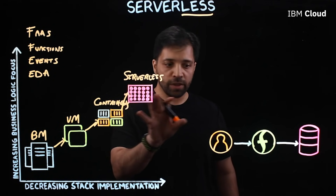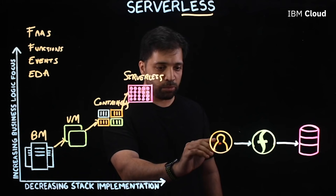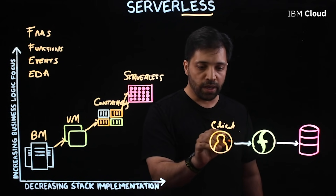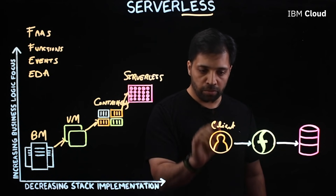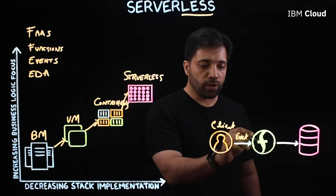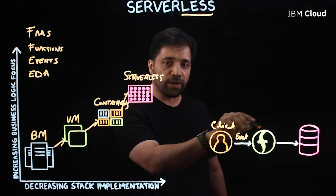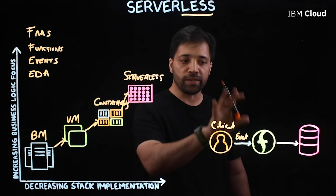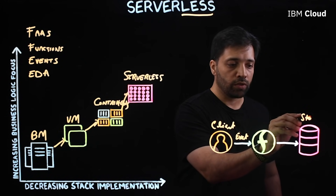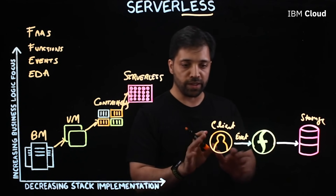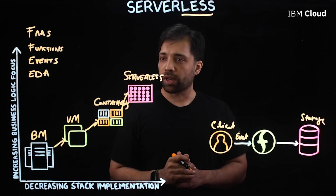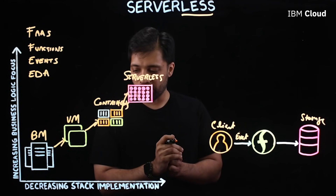Let me illustrate that with an example. A user comes on the client side and uploads an image and presses a button to submit. It creates an event. That event calls or invokes a function which does the resizing of that image, and it stores it into storage. This is a very oversimplified example of how function-as-a-service works and how you build your apps in a serverless environment.